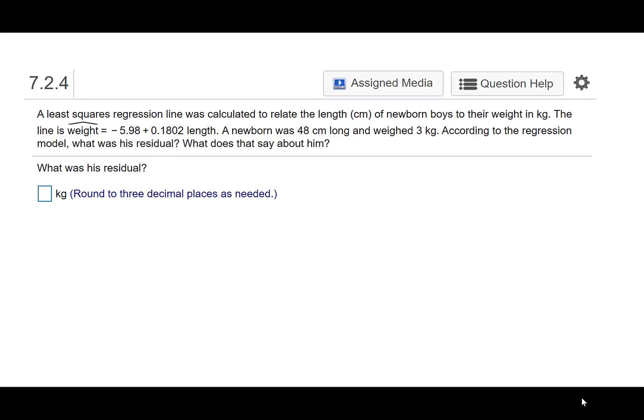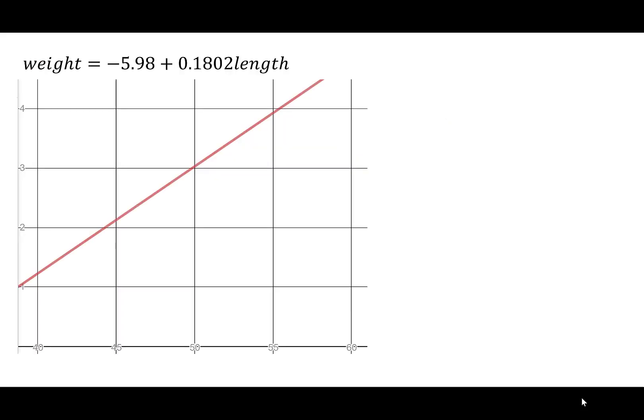What was the residual? Quick review: here is our line. If we were to graph this line, weight equals negative 5.98 plus 0.1802 times length, so our weight is the y-axis and the length is the x-axis.